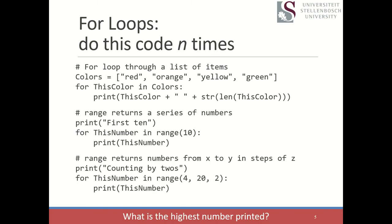This brings us to looping — really, really valuable. We already mentioned a loop in our flow chart. We'll look at two kinds: the for loop, which you need when you have a certain number of times to run your code, and the while loop, which gives you the ability to set a condition for continuance.